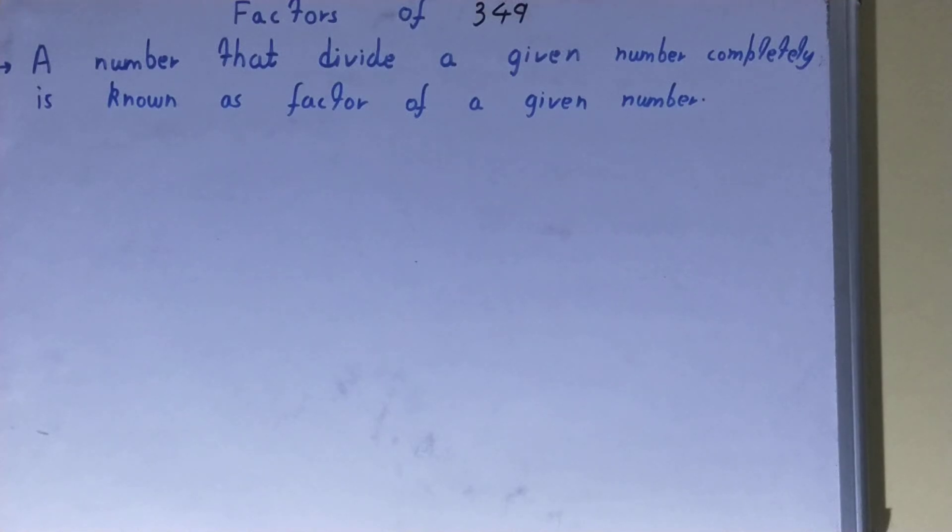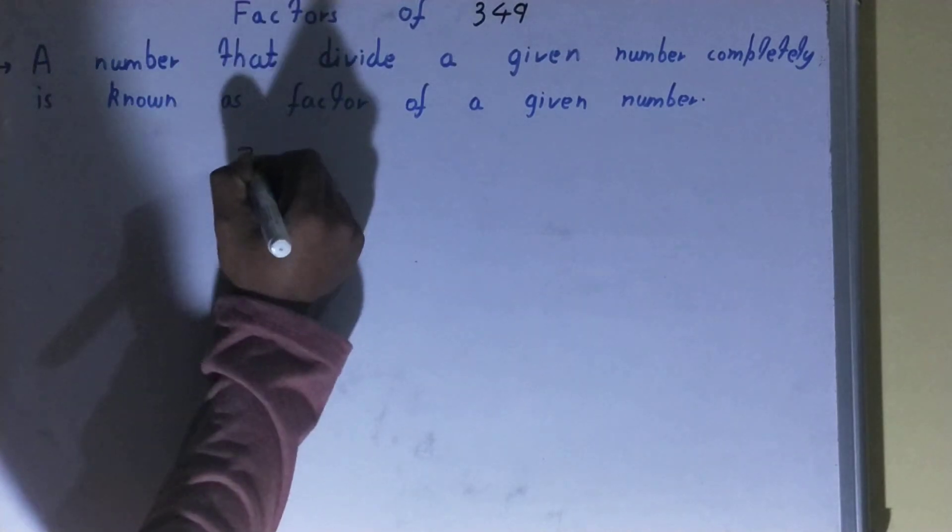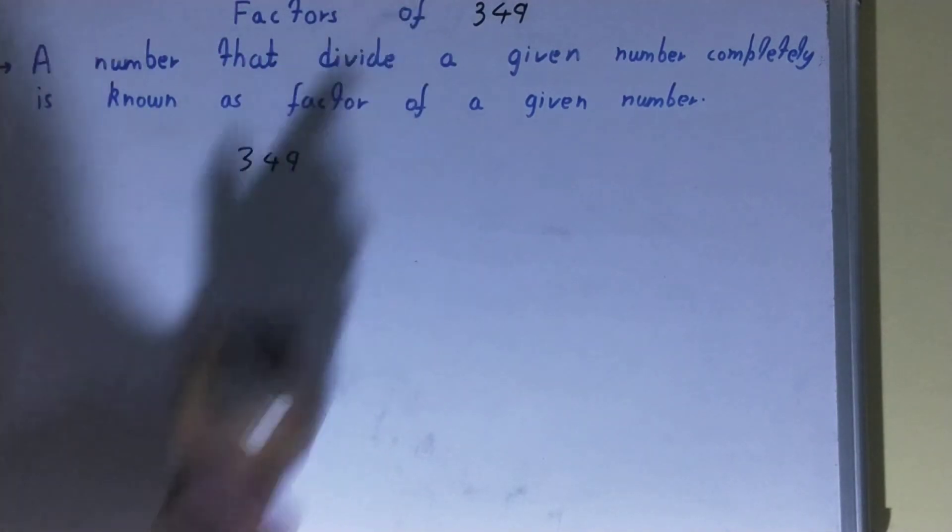Hello friends, and in this video I'll be helping you with the factors of the number 349. So let's start. To find it out, you need to write the number like this, and the first thing you should know about the number is whether the number is a prime number or a composite number.